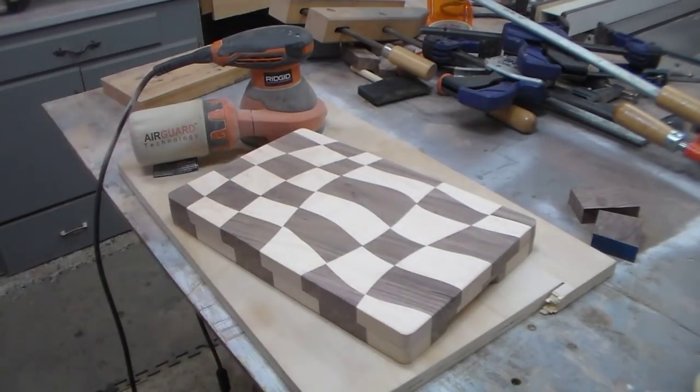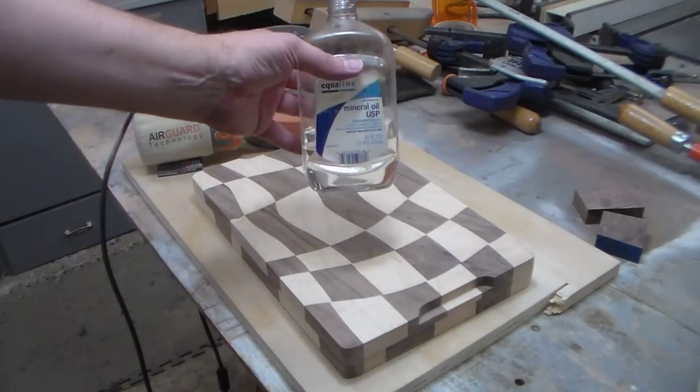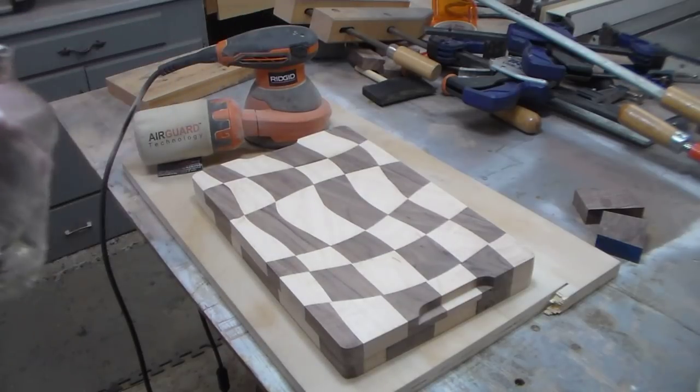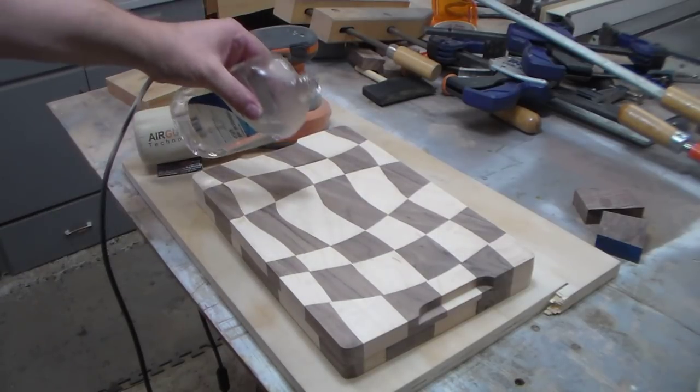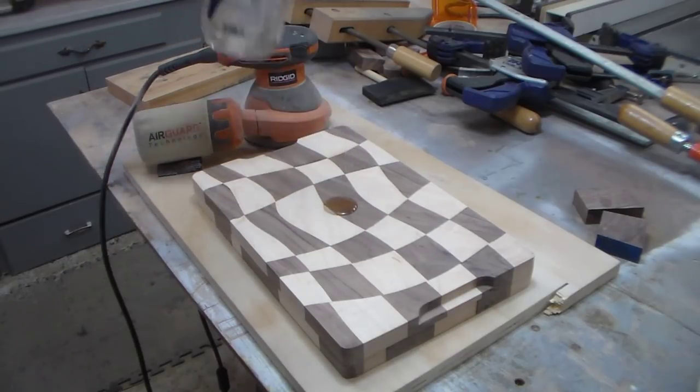And just been getting it smooth. I'm just going to go ahead and put on the finish now. Traditional finish is simply mineral oil and that's all I'm going to do. I've seen lots of different finishes on cutting boards, but since this is my first one, I figured we'd go traditional.